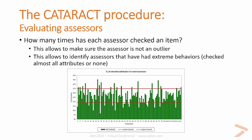The CATARACT procedure starts with evaluation of the assessor: how many times has each assessor checked an item? On the bar chart, you can see cross-products and cross-attributes how many times an assessor has checked items. For example, the first assessor has been checking items 15% of the time, which is low compared to the other assessors. A confidence interval on proportions is displayed to help identify whether an assessor is average or more extreme. Depending on the situation, you might want to remove these assessors or group them for a separate analysis.